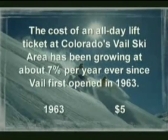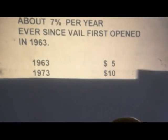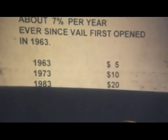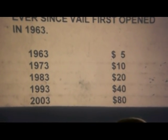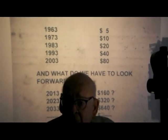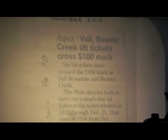Do you know what 7% really means? Let's look at an example from Colorado. The cost of an all-day lift ticket to ski at Vail has been growing about 7% per year ever since Vail first opened in 1963, when you paid $5 for an all-day lift ticket. The doubling time for 7% growth is 10 years. So the cost doubled every 10 years: 1973, 1983, 1993, 2003. This is what 7% means — most people don't have a clue. And Vail is just about on schedule.